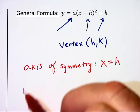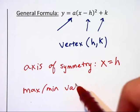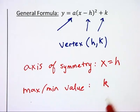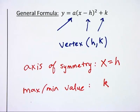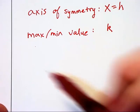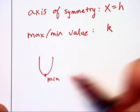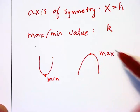And there will be a maximum or minimum value at y equals k. I'm just going to write k here because it's the value k, whereas x equals h is an equation of a line. When your parabola opens upward, you will have a minimum value. And when your parabola opens downward, you will have a maximum value.